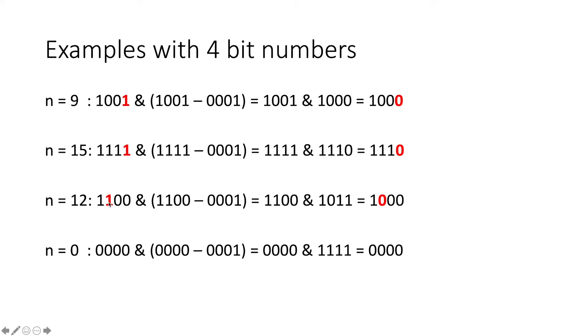When we try something where the lowest 1-bit is several positions forward, it still works. So for something like 1100, we AND it with 1100 minus 1, and we get 1000, which again unsets the lowest set bit. And when n equals 0, it does nothing because there are no set bits.